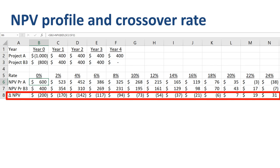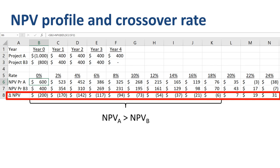The table for discount rates from 0% through 24% shows that for discount rates from 0% through 18%, the NPV of project A exceeds that of project B. For discount rates from 20% and above, the NPV of project A is lower than that of project B. The crossover rate — the point where the NPVs of the two projects are equal — is halfway between 18% and 20%, around 19%.